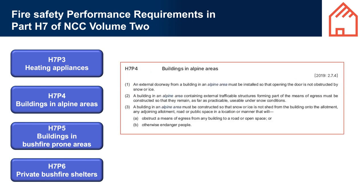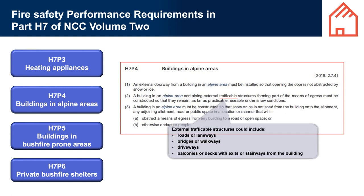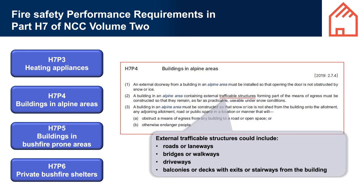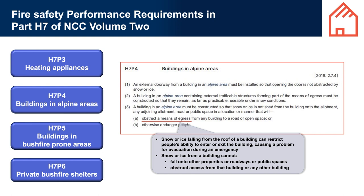H7 P4 - Buildings in Alpine Areas. An alpine area is an area where snow loads are significant, receiving significant snowfall likely to accumulate on the ground, located in New South Wales, Victoria and Tasmania. External trafficable structures could include roads, laneways, bridges or walkways, driveways, and balconies or decks with exits or stairways from the building. Obstructions means that snow or ice falling from the roof of a building can restrict people's ability to enter or exit the building, causing a problem for evacuation during an emergency. Snow or ice from a building cannot fall onto other properties or roadways or public spaces, or obstruct access from that building or any other building.